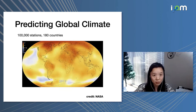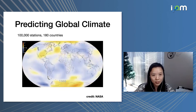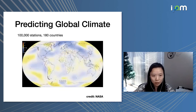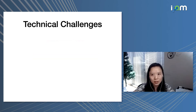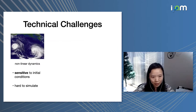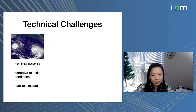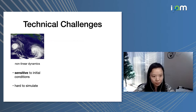Compared with traditional machine learning applications, such as text data or image data, spatial temporal data pose unique challenges to existing machine learning algorithms. For example, one of the challenges is nonlinear dynamics. This is a hurricane picture, and a hurricane is a canonical example of nonlinear dynamics, meaning a small change in the beginning will lead to a drastic difference when we run the system for a long time. This is also known as the butterfly effect. Nonlinear dynamics are very difficult to simulate due to their sensitivity to initial conditions.